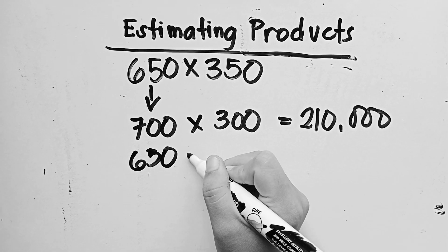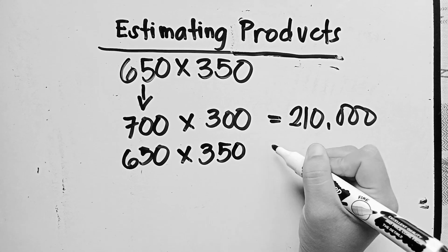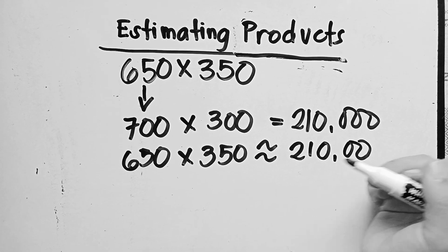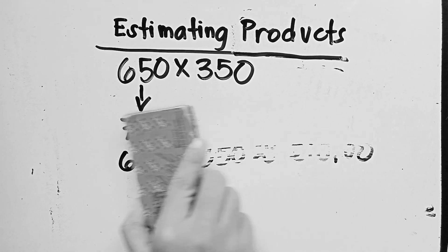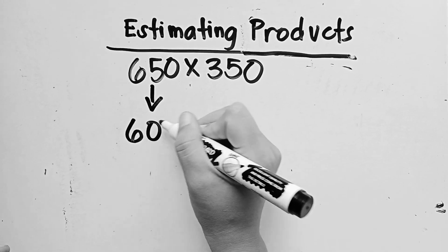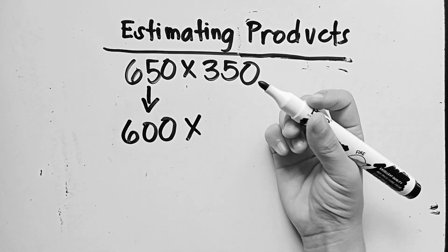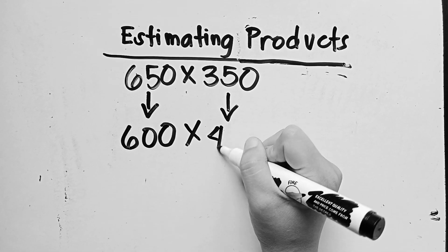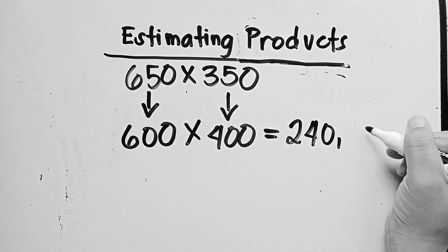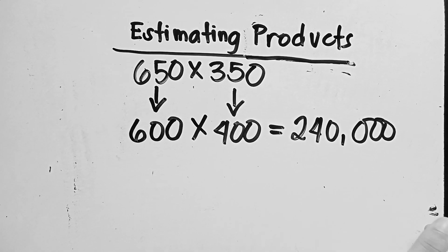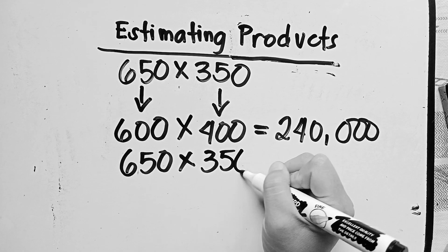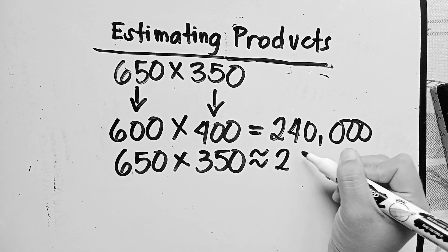So, 650 multiplied by 350 is approximately equal to 200,000. You can also round the first number down and the second number up — so 650 becomes 600 multiplied by 350 becomes 400, giving 200,000. Either way, 650 multiplied by 350 gives the approximate value of 200,000.